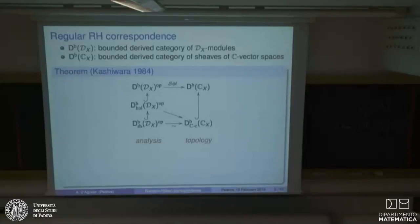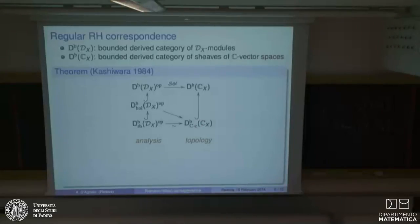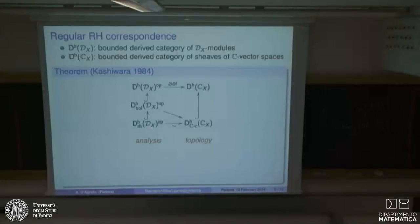If you start from a constructible complex, you can cook up a regular holonomic D-module explicitly, which gives back your constructible complex by taking solutions. Also, perverse sheaves sit inside as a full subcategory. Perverse sheaves appear in the book by Beilinson, Bernstein, Deligne (and perhaps Gabber), but the notion of perversity was already found implicitly by Kashiwara, studying solutions of regular holonomic D-modules. Inside sits the category of modules — complexes concentrated in degree zero — and through this equivalence they correspond exactly to perverse sheaves on the right-hand side.